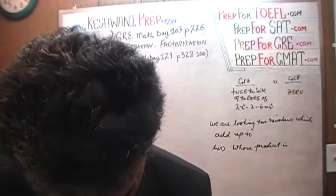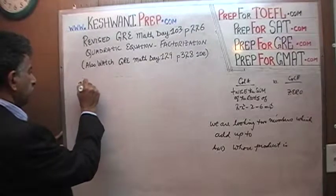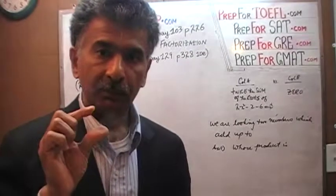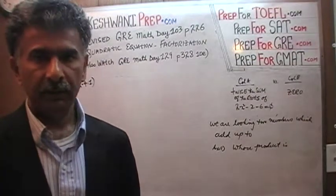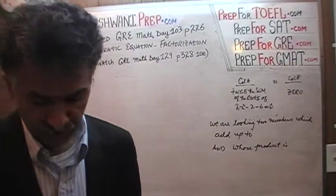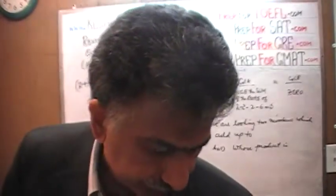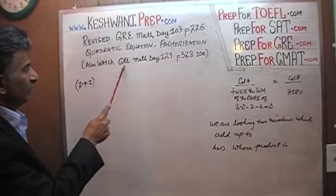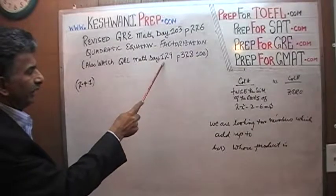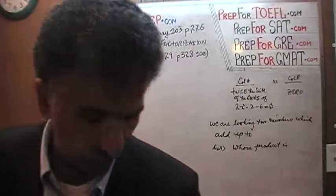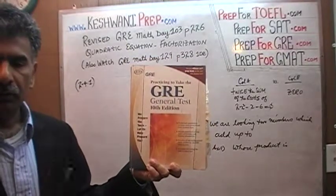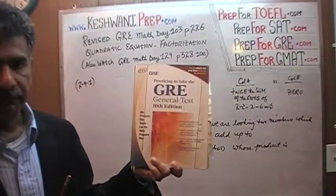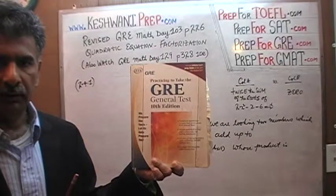On page 226, example 2.4.1, that's the problem we're going to do but with a little twist. I've presented the exact same problem in a different format. To see the original format, type in 'GRE math day 129, page 328, 10th edition.' That book — 'Practicing to Take the GRE, General Test, 10th Edition' — is the older version of the exam and has seven full exams, making it an excellent source for additional practice material.